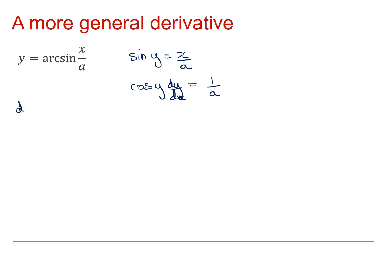Cos y dy/dx equals one over a. And then rearrange to get an expression for dy/dx. So dy/dx equals one over a cos y. Again, I can replace the cos y with root one minus sine squared y. And I don't need to worry about plus or minus because I know that dy/dx now is always positive.